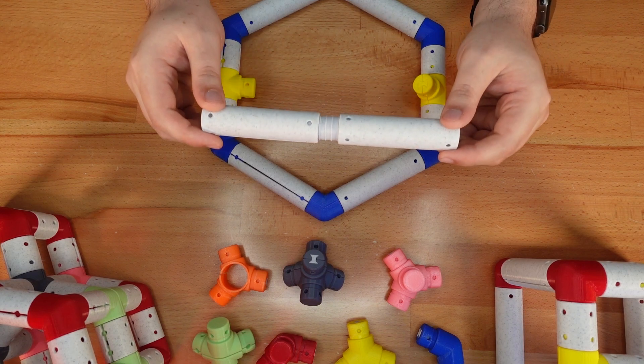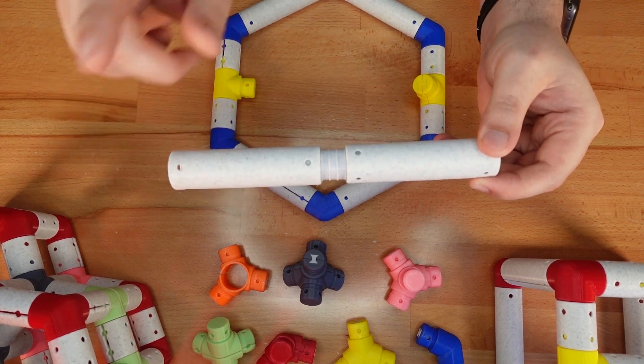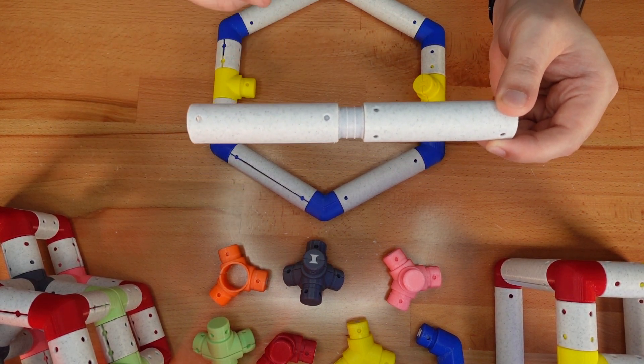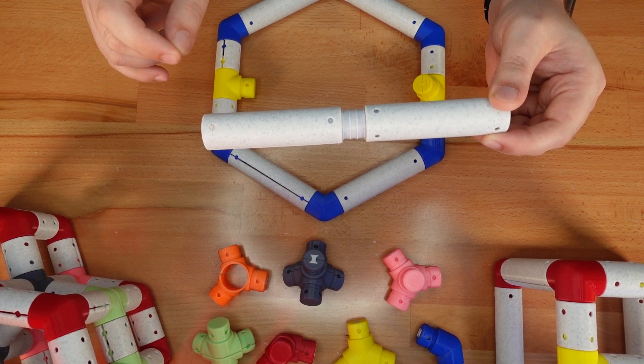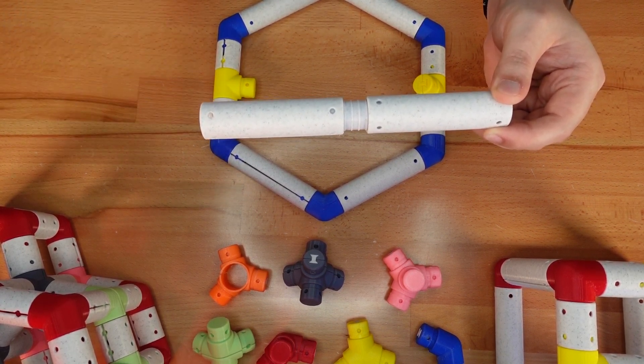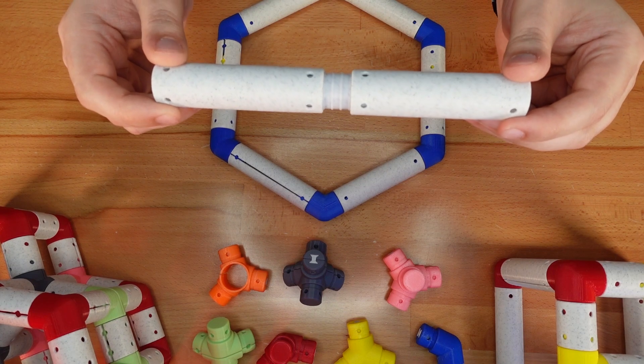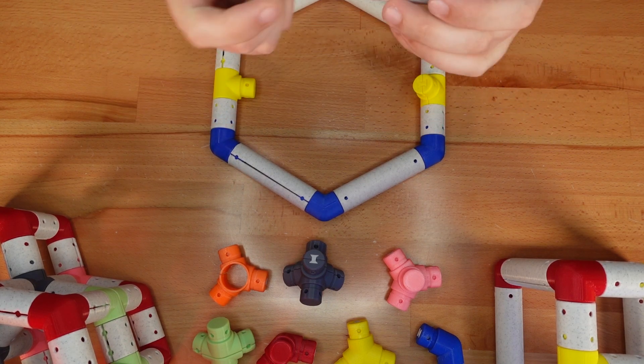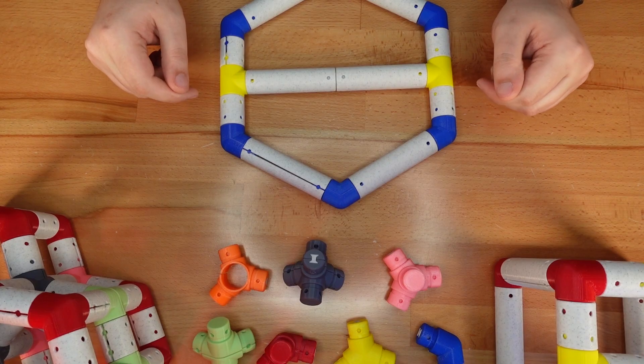This is where pipe extenders come in. Pipe extenders join multiple pipes with a little wiggle room to customize the space between them. In this case, two medium pipes pressed firmly together will work just fine.